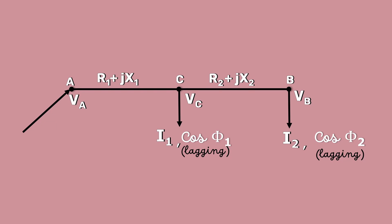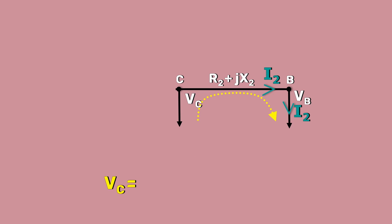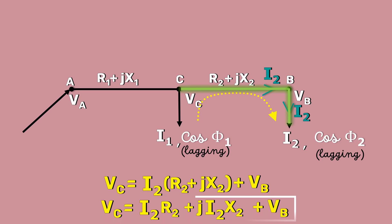Look at this symbolic notation. Can you find the equation for VC? It is the sum of the voltage drop in the CB section and the node voltage VB. VC is equal to I2 into R2 plus JX2 plus VB.